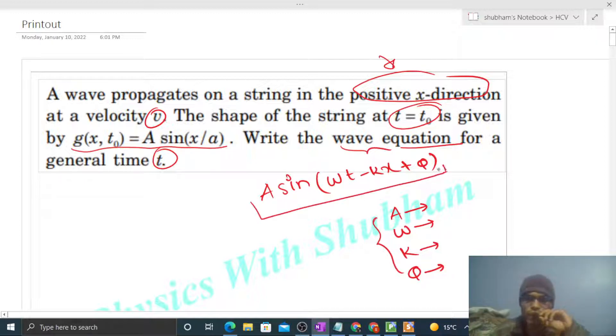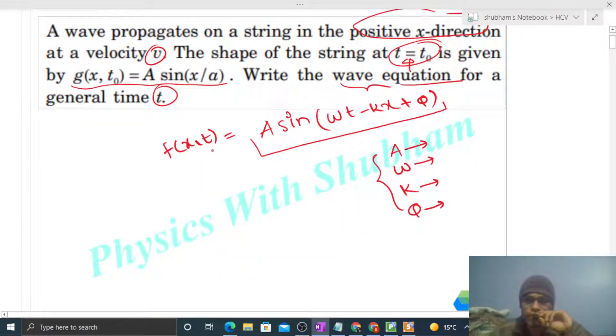What is given? You see, this equation is a function of x and time. Now it is given that at time t equals t naught, we have the equation. So if we put t equals t naught in the equation...